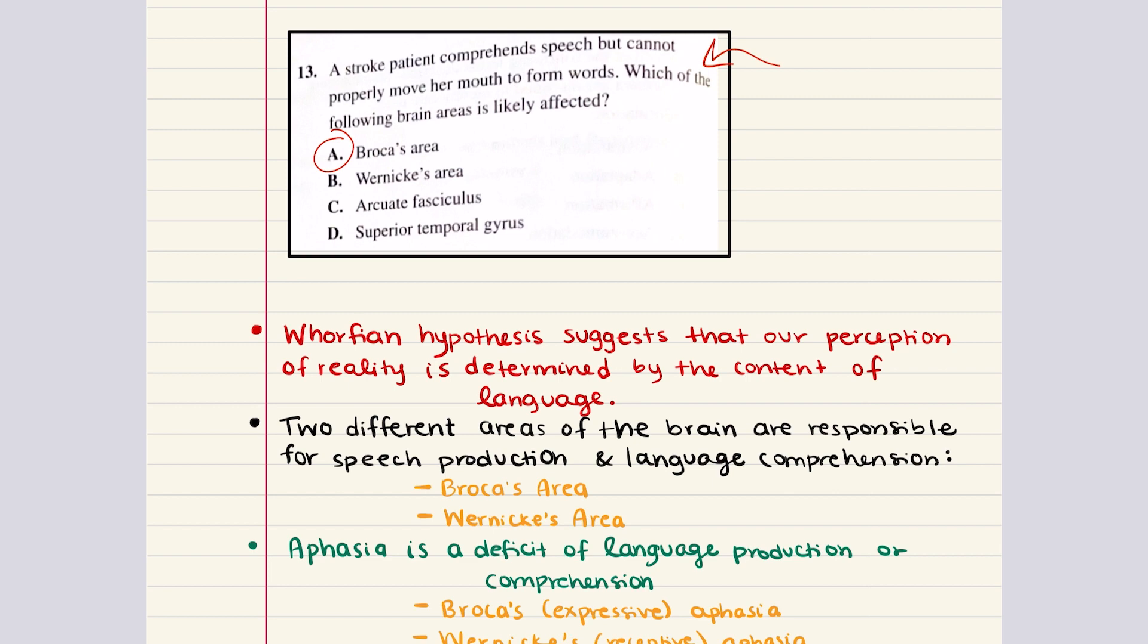The brain area that's likely affected is Broca's area. A stroke affecting Wernicke's area will make it so the individual is unable to comprehend speech. A stroke affecting answer choice C is going to result in an inability to repeat words heard, but spontaneous language production is going to be intact. For answer choice D, superior temporal gyrus, this is where Wernicke's area is located. If this patient comprehends speech but can't properly move her mouth to form words, the area of the brain that's likely affected is Broca's area, making the correct answer for 13 answer choice A.